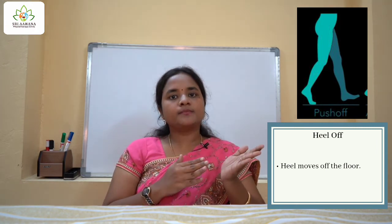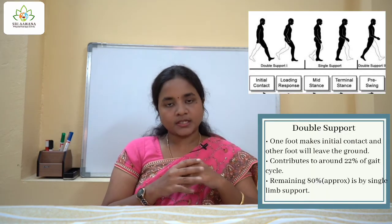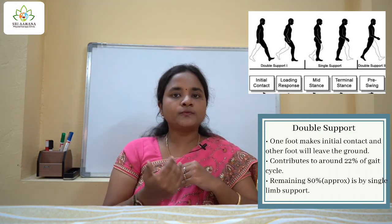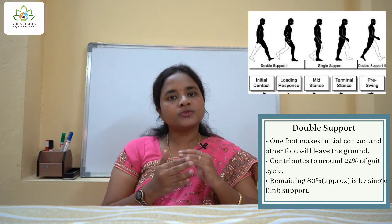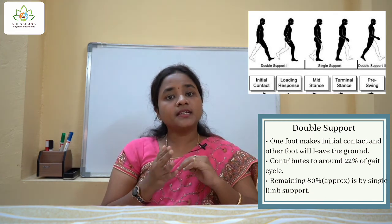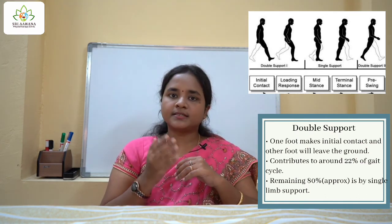During the gait cycle, one lower limb will be in the stance phase and the other will be in the swing phase — this is how the body propels forward. There is also the concept of double limb support, where one foot makes initial contact while the other foot leaves the ground, contributing to around 22 percent of the gait cycle. Single limb support contributes to around 80 percent of the gait cycle.